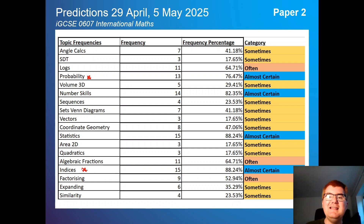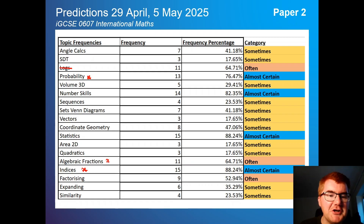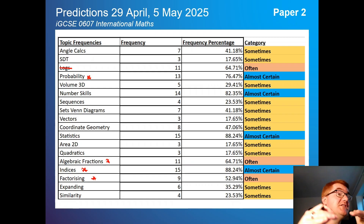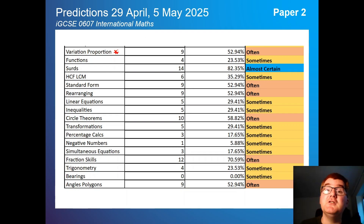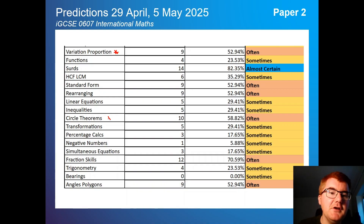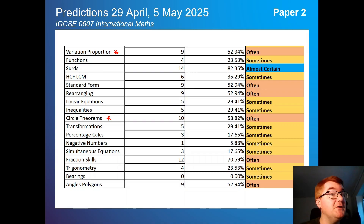Topics in the 'often' category — not logs anymore, but things like algebraic fractions and factorizing — now probably move into a more 'almost certain' category because the exam is so long. Topics like variation and proportion are very popular on the non-calculator paper. Circle theorems could also appear on paper 2, so make sure you've covered those 'often' topics, particularly for paper 2.